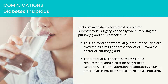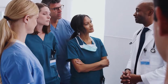Diabetes insipidus (DI) is seen most often after supratentorial surgery, especially when involving the pituitary gland or hypothalamus. It is a condition where large amounts of urine are excreted as a result of a deficiency of ADH from the posterior pituitary gland. The condition occurs when the hypothalamus has been damaged and can no longer regulate the release of ADH. Treatment of DI consists of massive fluid replacement, administration of synthetic vasopressin, careful attention to laboratory values, and replacement of essential nutrients as indicated. That ends the lesson on brain tumors.